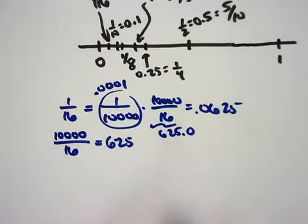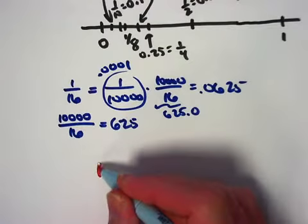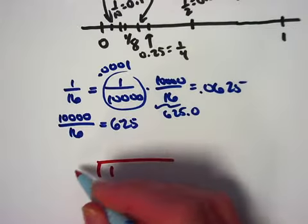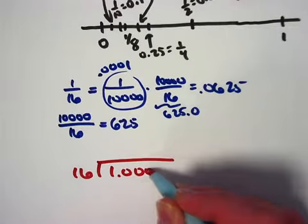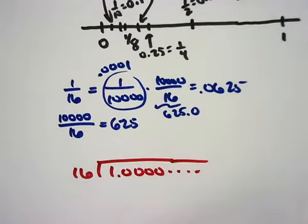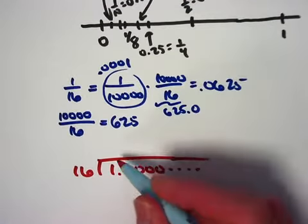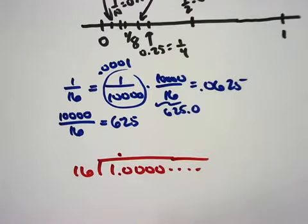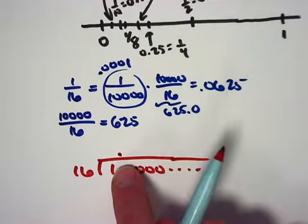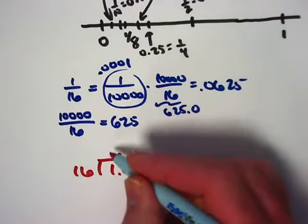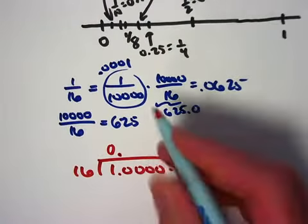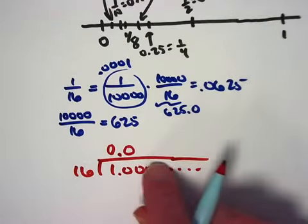Let's go ahead and do one-sixteenth as a long division. Put the one there, put the sixteen, what you're dividing by, out there, and think of one as 1.000, et cetera, as many zeros as you might need. You put the decimal directly above the other decimal there, and then you sort of ignore it except for the place value. Sixteen doesn't go into one, doesn't go into ten. So because it doesn't go into one, you put a zero here. Because it doesn't go into ten, you put a zero there. But it does go into a hundred.